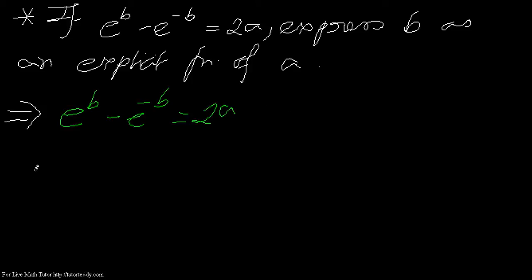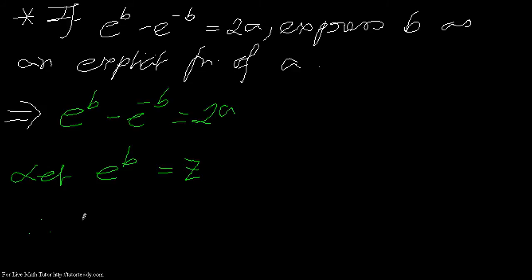We will make some assumptions here. Let e to the power b equal z. In that case, this equation can be written as z minus 1 over z — since e to the power minus b is 1 over e to the power b, which is 1 over z — equals 2a.